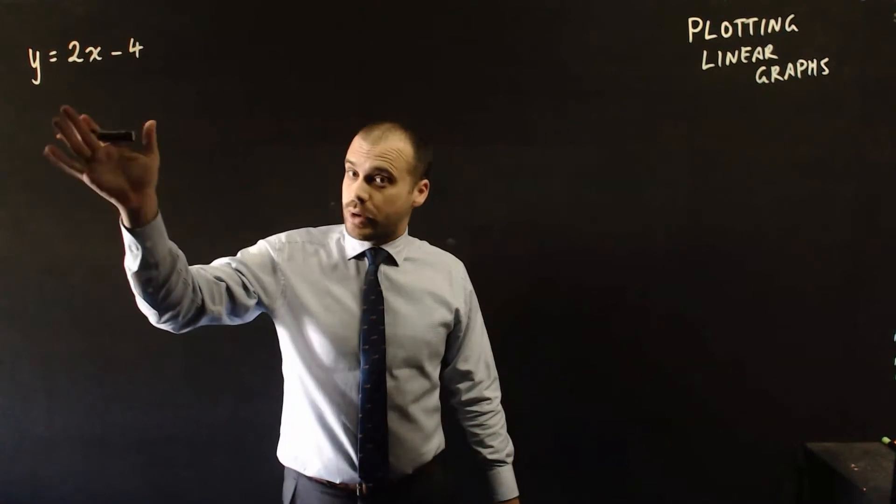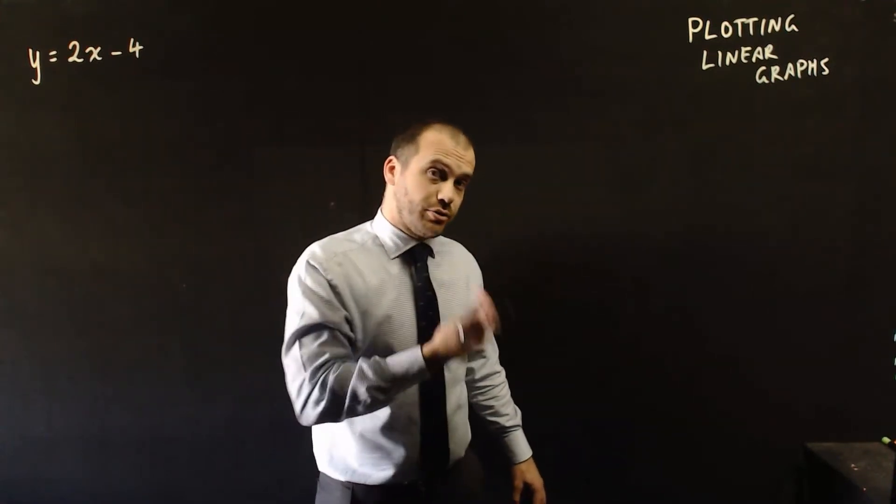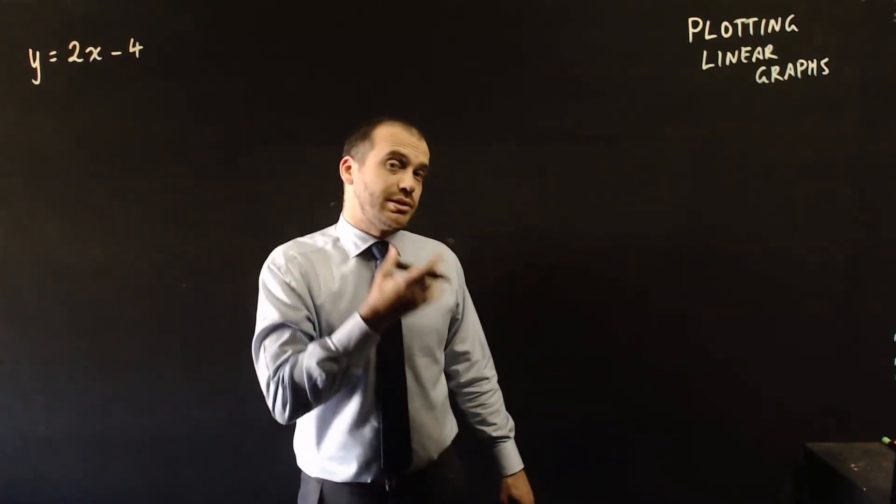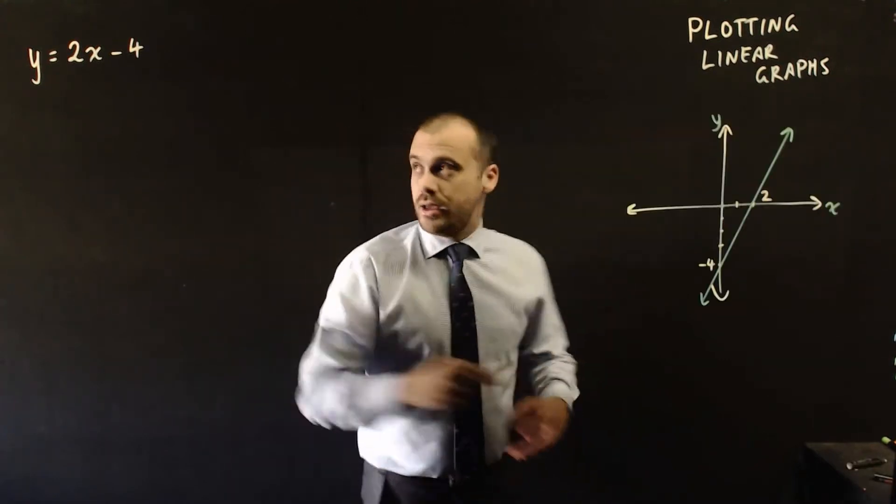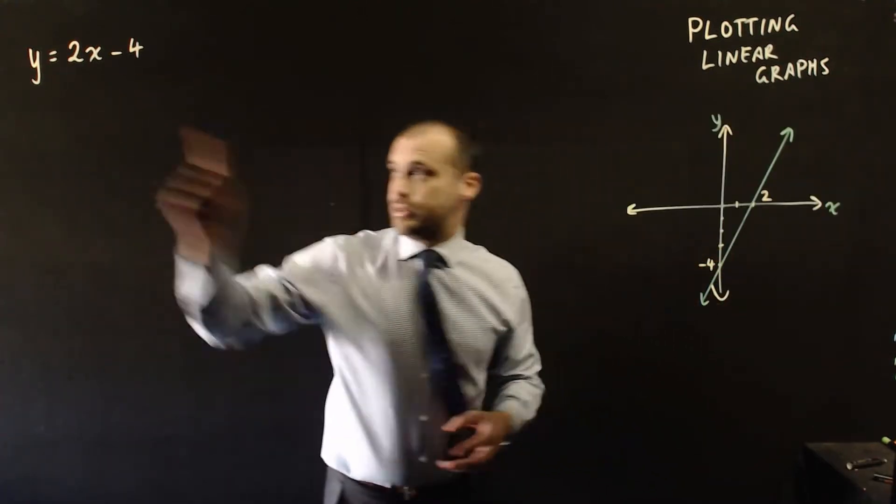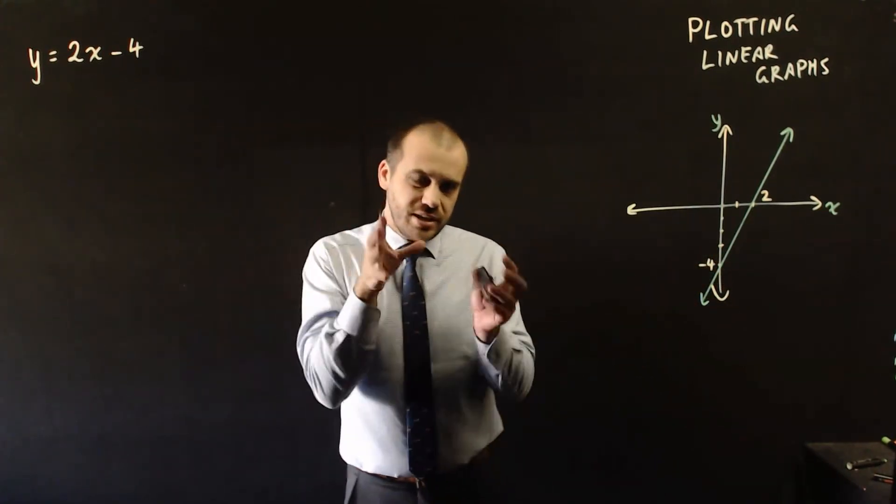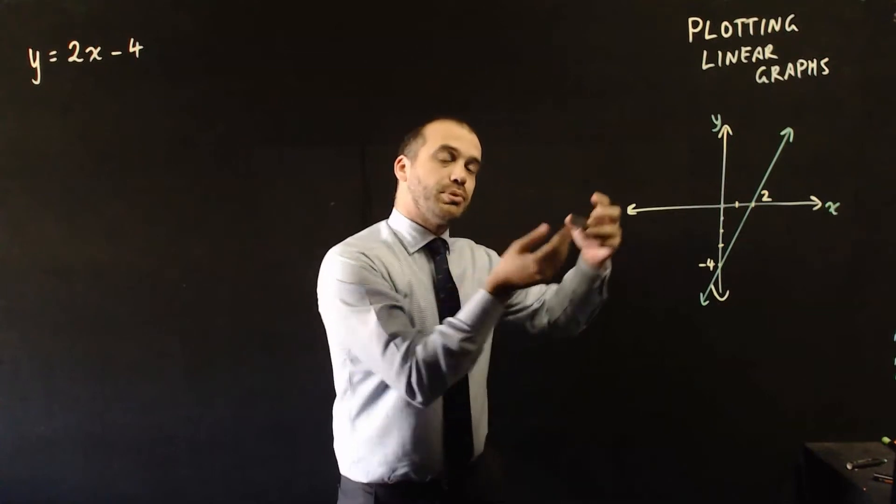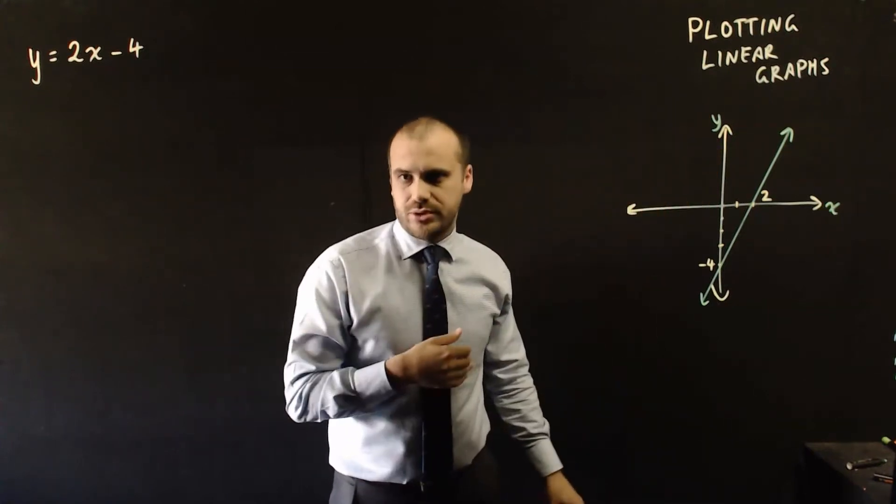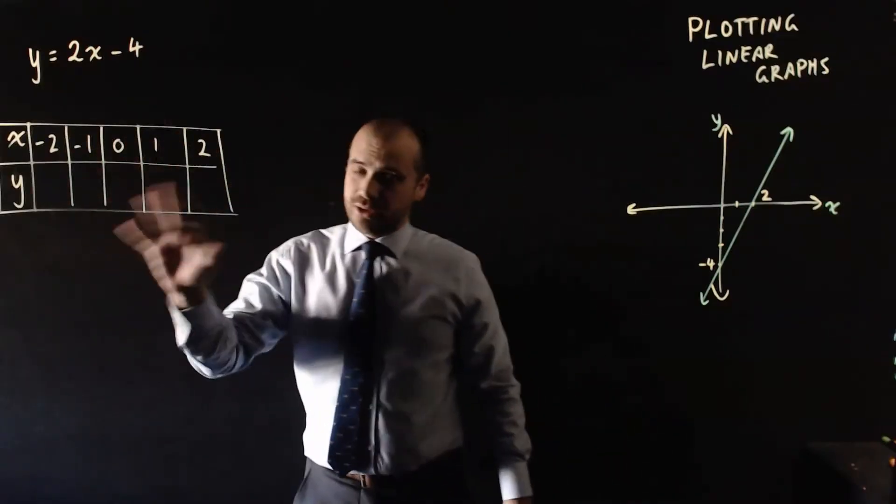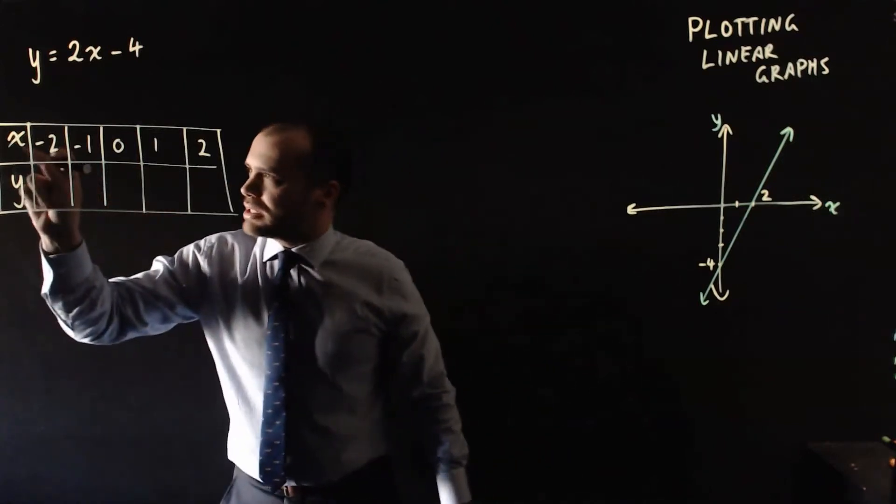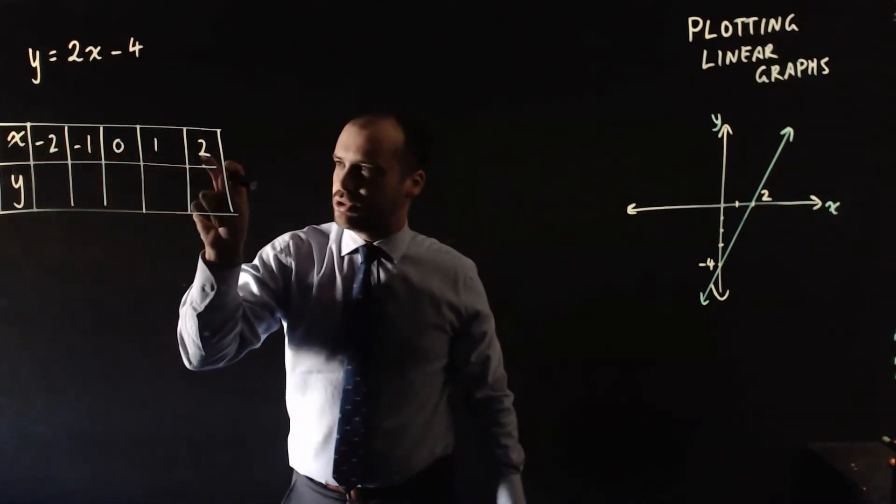Now, this is a linear equation and it describes a linear graph. In particular, it describes this linear graph right here. This equation is this line. This line is this equation. Now, I'm getting ahead of myself. I want to show you how to plot this using a table of values.